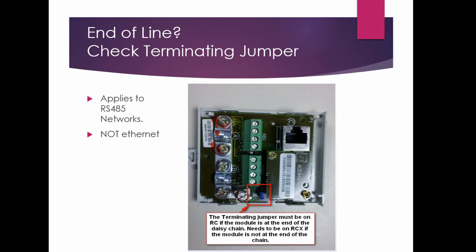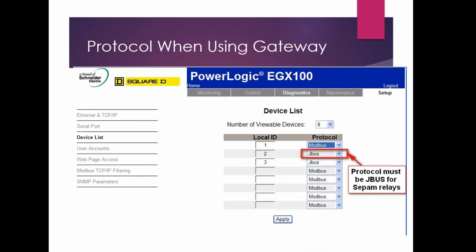If the module is at the end of the line, make sure the RC and RCX jumper is in the proper position. This does not apply to Ethernet — only to daisy-chained RS-485. Your protocol when using a gateway, whether it be the EGX 100, EGX 300, a Lynx, or an ION meter COM port, has to be set as JBUS in order to have the proper offset.